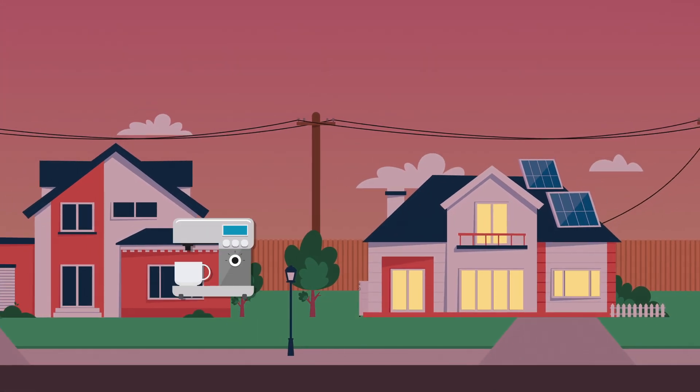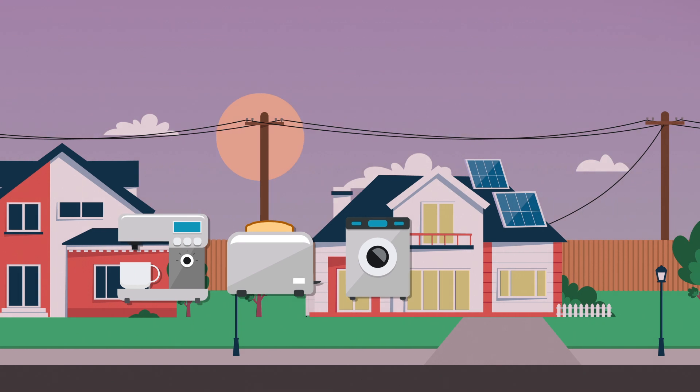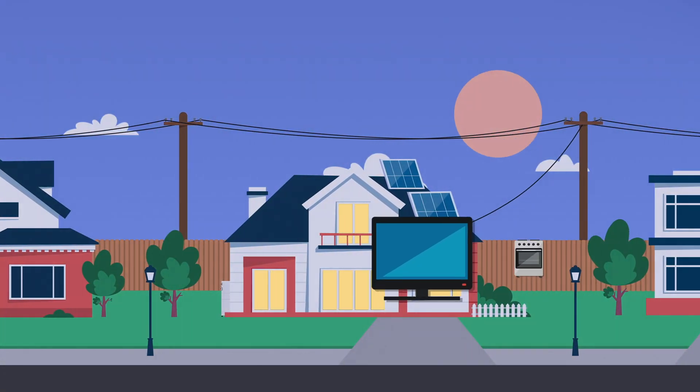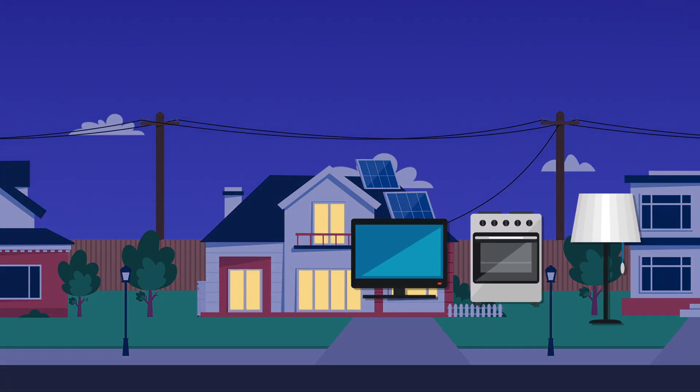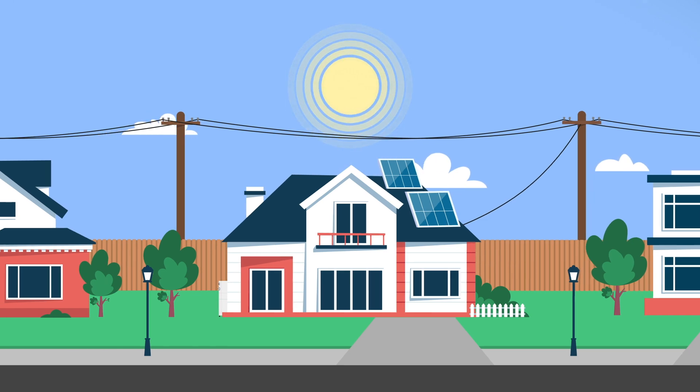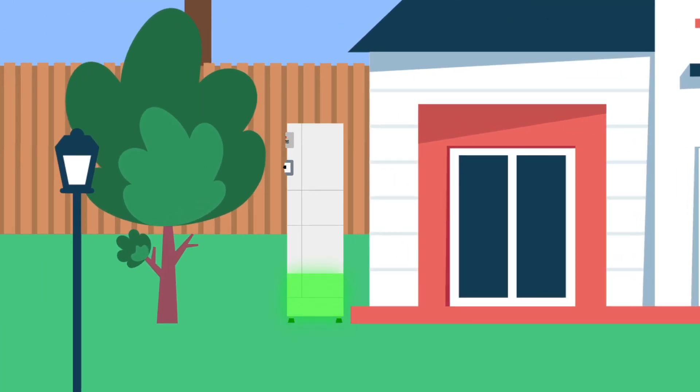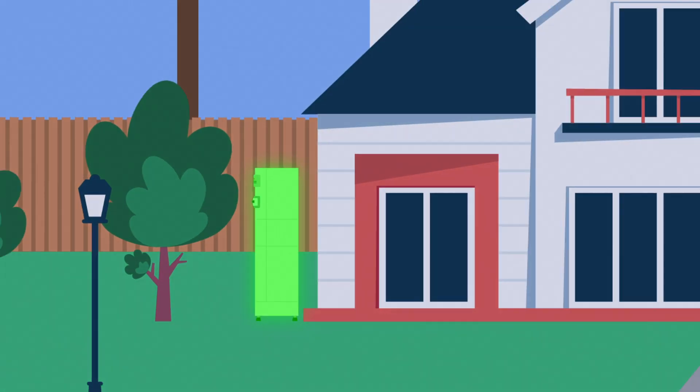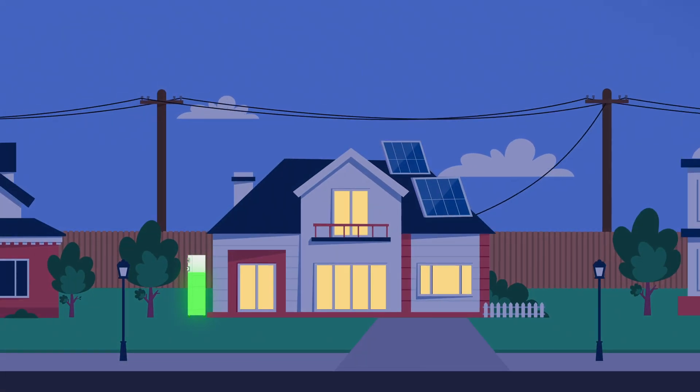The average Australian uses the most electricity in the mornings when getting ready for work and in the evenings when we get home. Instead of selling the excess solar power generated throughout the day, a solar home battery system can help you capture that power and use it when the sun isn't shining, saving you even more.